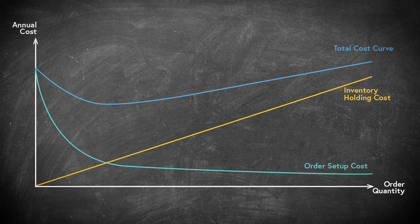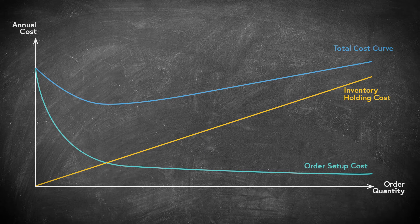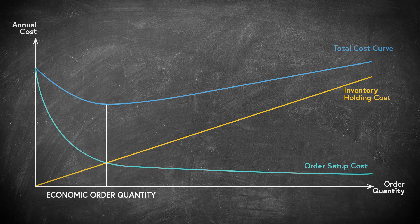We must of course look at the total costs, which is simply calculated by adding the two cost curves. The economic order quantity, that is the amount of goods we should order each time, is now given by the lowest point in the cost curve. The economic order quantity formula can of course also be derived mathematically by simple derivation and optimization.